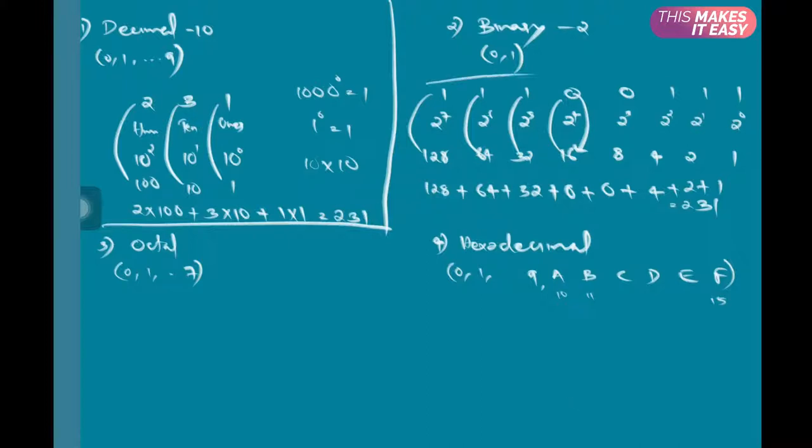So corresponding to 231 in decimal system, this is the binary number. In coming videos we'll discuss how to convert decimal to binary and binary to decimal. For now, I'm explaining how the base works in binary, decimal, octal, and hexadecimal.